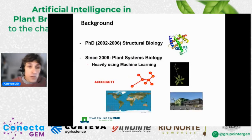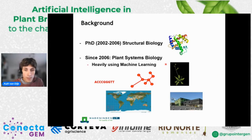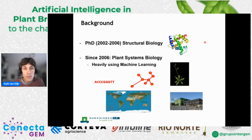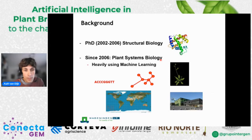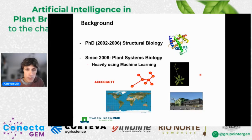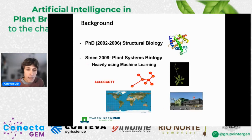Let me also briefly talk about my background. I did my PhD in structural biology, and you will see at some moment in this talk that now is also a very good time to think of using protein structures in machine learning. Currently I would use the phrase plant systems biology to summarize my research, but this really is mainly using machine learning on plant data. A lot of it is on Arabidopsis, but we're also moving towards applications in various crop species. Here on the map I'm showing where I'm located — this small dot is Wageningen.